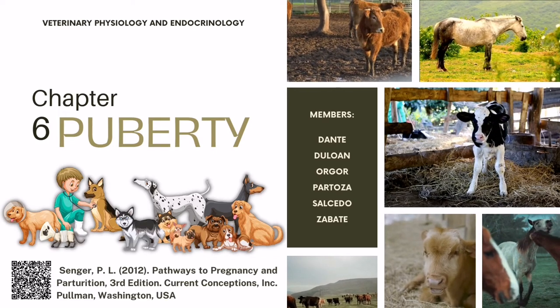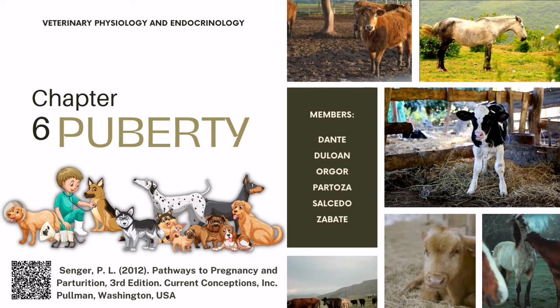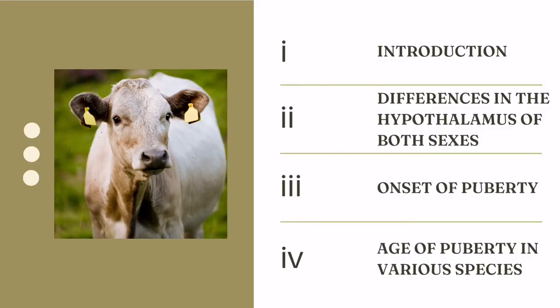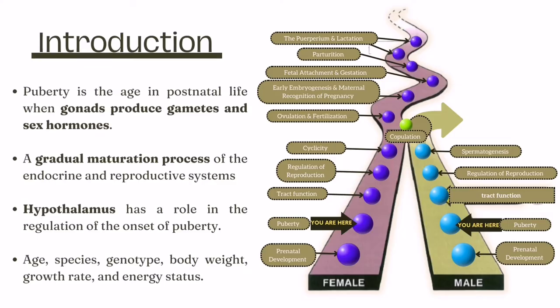In this video we are going to learn about the fundamental elements of puberty. Puberty is the age in postnatal life when gonads produce gametes and sex hormones in sufficient quantities to enable an animal to reproduce. It is not a sudden event but a gradual maturation process of the endocrine and reproductive systems allowing the animal to reproduce successfully.